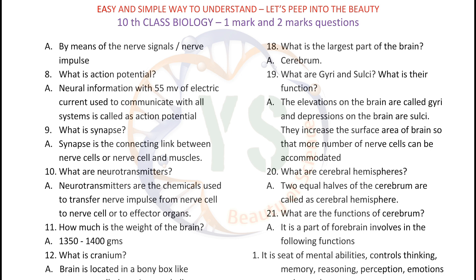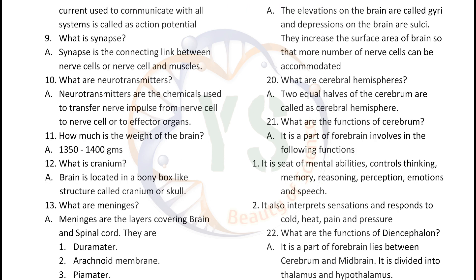What are cerebral hemispheres? Two equal halves of the cerebrum are called cerebral hemispheres. What are the functions of cerebrum? It is a part of forebrain involved in the following functions: it is the seat of mental abilities, controls thinking, memory, reasoning, perception, emotions and speech. It also interprets sensations and responds to cold, heat, pain and pleasure.